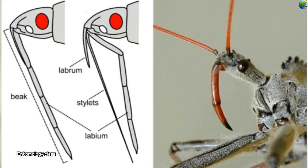Inside the Haustellate mouthparts there are two types: with the stylet and without the stylet. The stylet is the piercing organ — a needle-like structure used to pierce inside the skin of their host to suck the sap. The non-stylet type refers to insects that do not have this piercing organ.